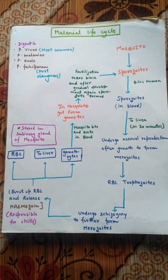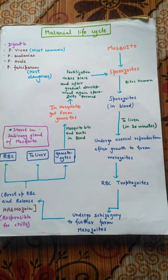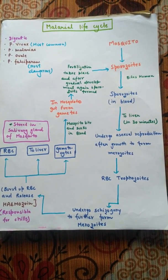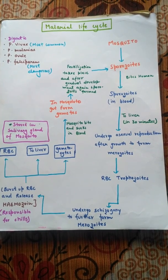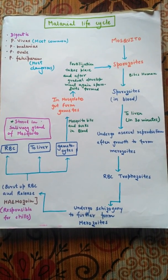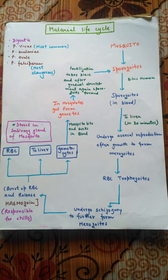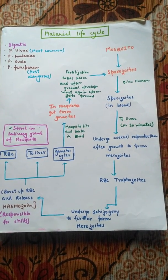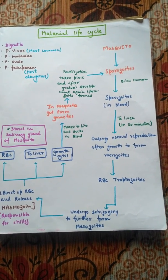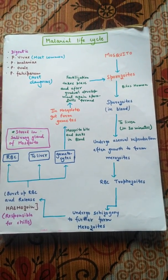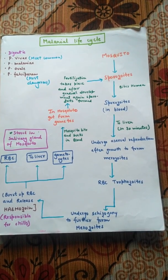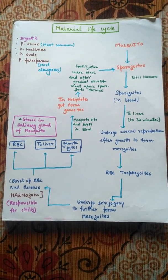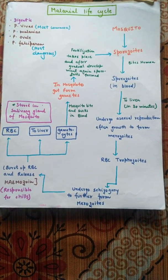Hello friends, welcome again. Today in this video I am going to talk about the malarial life cycle. Malaria is a very common disease and it is mainly caused by a vector known as the female Anopheles mosquito. Due to the female Anopheles mosquito, the malarial parasite is transferred from one host to another host and causes the disease malaria.